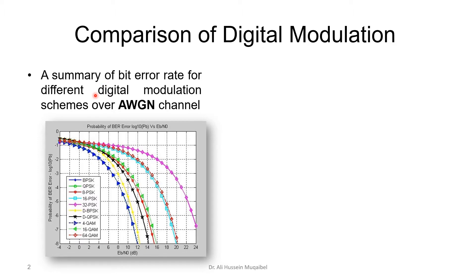Here is a summary of bit error rate for different digital modulation schemes over an additive white Gaussian noise channel. On the y-axis we have the probability of error — values like 10 to the minus 1, 10 to the minus 2, and so on, shown on a log scale. On the x-axis we have Eb over N0, the energy per bit divided by the noise spectral density — that's the signal-to-noise ratio in dB. As you go right, signal quality improves and error decreases, giving those characteristic waterfall-shaped curves.